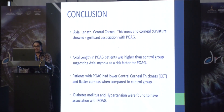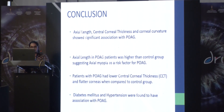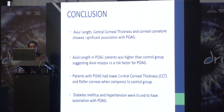To conclude, axial length, central corneal thickness, and corneal curvature showed significant association with primary open angle glaucoma when compared to the control group. The axial length in the primary open angle glaucoma group was higher than the control group, suggesting axial myopia as a risk factor. Patients with primary open angle glaucoma had lower central corneal thickness and flatter corneas when compared to the control group. Diabetes mellitus and hypertension were also found to have association with primary open angle glaucoma.